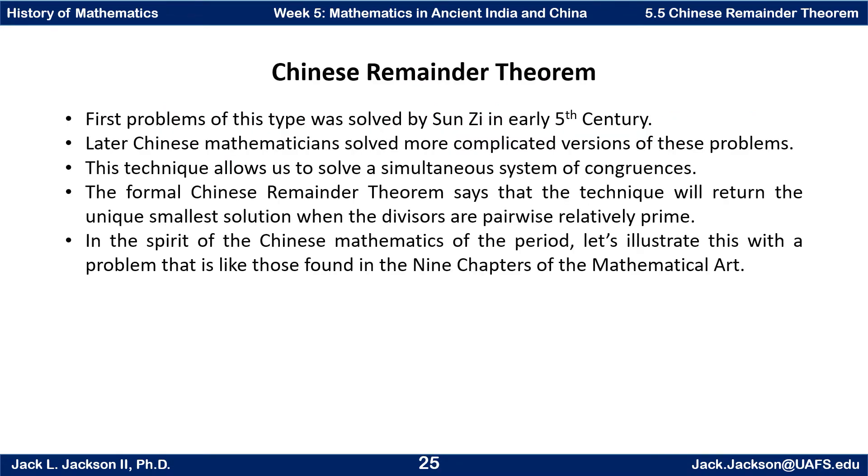The first problems of this type were solved by Sun Zi in the early 5th century. Later Chinese mathematicians solved more complicated versions of these problems. But this technique allows us to solve a simultaneous system of congruences modulo a natural number. The formal Chinese remainder theorem says that this technique will return the unique smallest solution when the divisors are pairwise relatively prime. In the spirit of the Chinese mathematics of the period, let's illustrate this with a problem that's like one of those found in the nine chapters of the mathematical art.